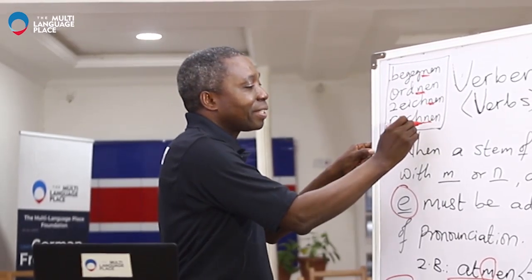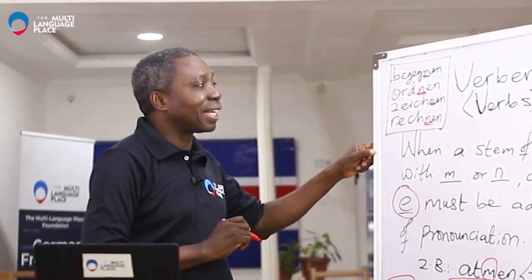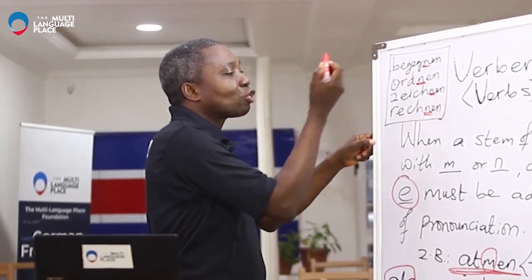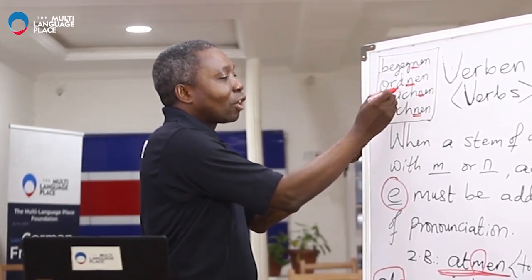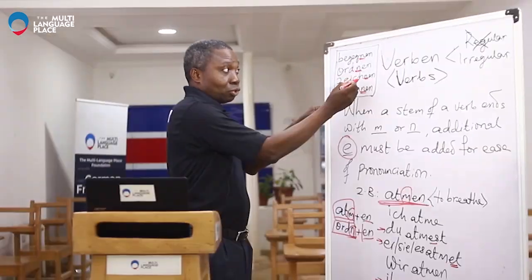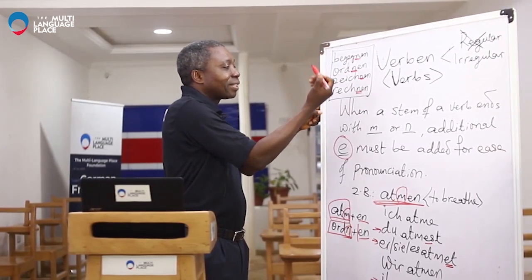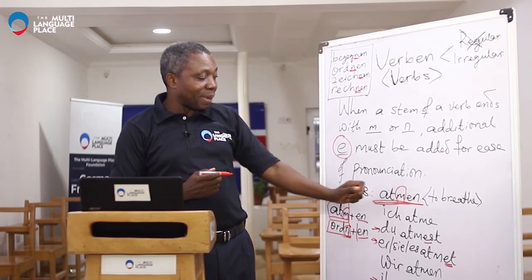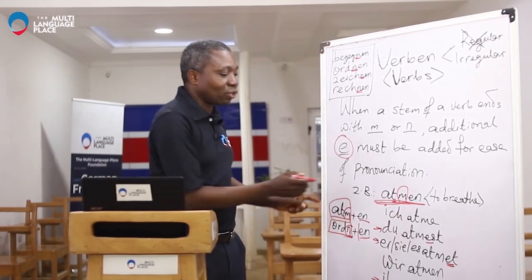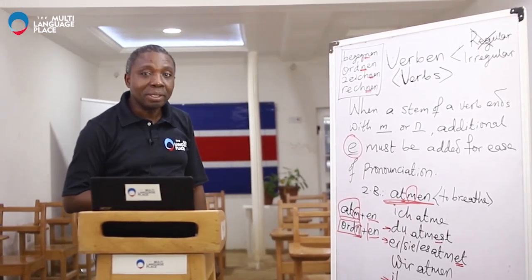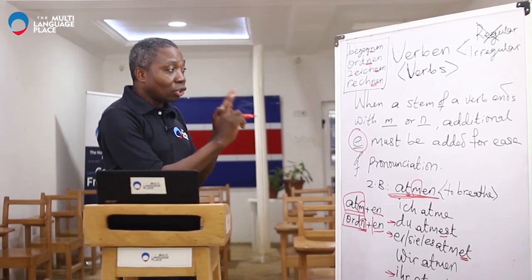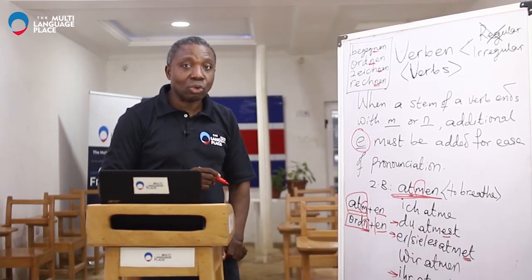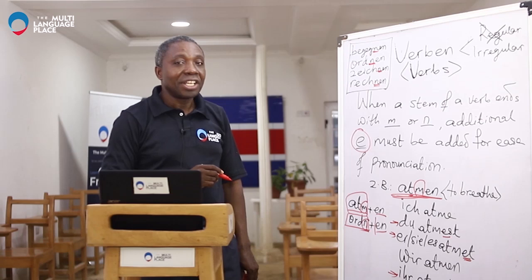I want to tell you another thing. You see here there is an N, then a consonant — N, consonant, N. So where we have a consonant before M or N, and the same thing in 'atmen,' you still see a consonant before the M or the N. Those are the conditions that qualify them to have the additional E.